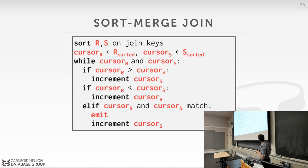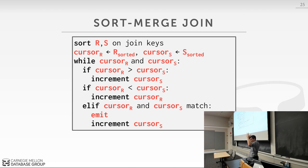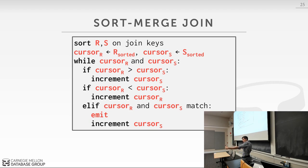The sort-merge join algorithm: sort both tables on the join keys. Then scan through with two cursors until either one reaches the end. At each step: if the outer cursor value is greater than the inner cursor value, increment the inner cursor; if the outer cursor is less than the inner, increment the outer cursor; otherwise you have a match — produce the join tuple as output, and then increment the inner cursor by one.